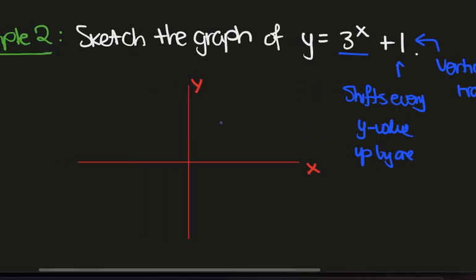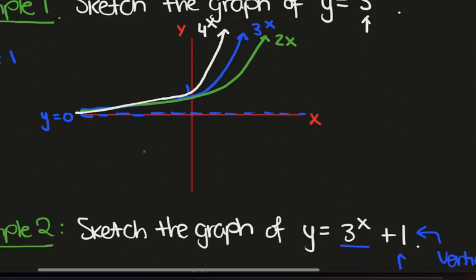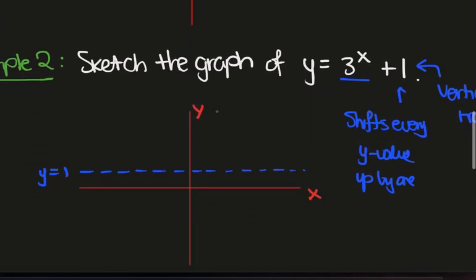Okay, so the horizontal asymptote was originally at x equals 0 for y equals 3 to the x, but that's now shifted up to be y equals 1. Recall that it was originally at y equals 0. The y-intercept was originally at 1, but now that's going to be 2. And then we just draw the same curve again. And that's it for that example.